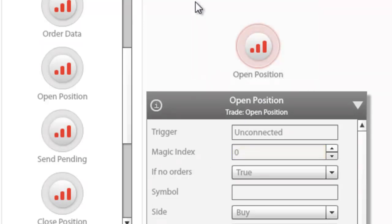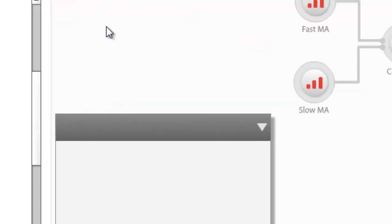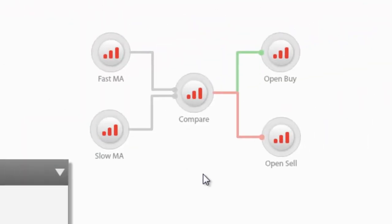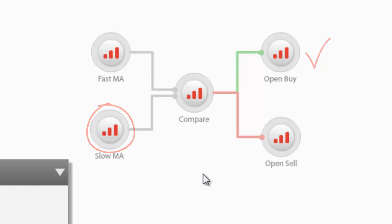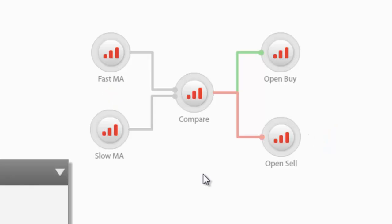Let's look at an example to demonstrate. Here's an EA that will initiate buy and sell orders based on a simple moving average crossover system. The advisor would buy whenever the fast MA crosses above the slow MA, or sell whenever the opposite is true. This means that the system will be opening both types of trades whenever these conditions are met.